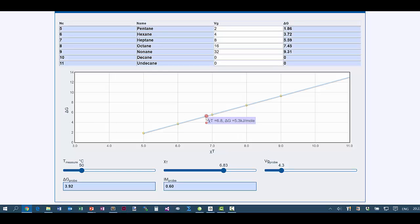This alkane should behave as if it had a delta G of 5.3 because it's a 6.8-carbon alkane, and if it had that, the surface would be perfectly smooth. We know the delta G of the probe in reality.